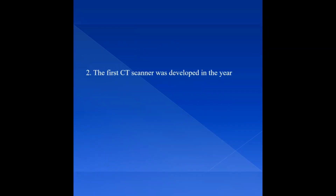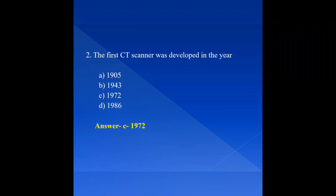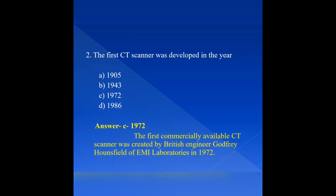Question 2: The first CT scanner was developed in the year — Option A: 1908, Option B: 1943, Option C: 1972, Option D: 1986. The answer is Option C: 1972. The first commercially available CT scanner was created by British engineer Godfrey Hounsfield of EMI laboratories in 1972.